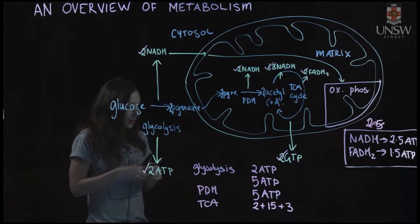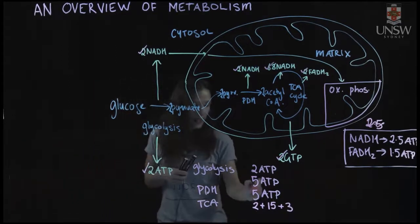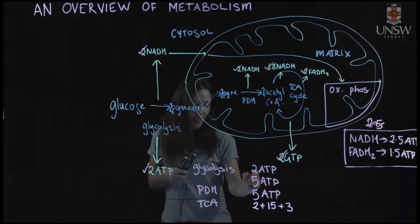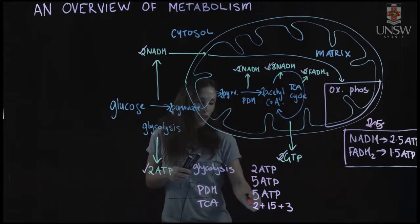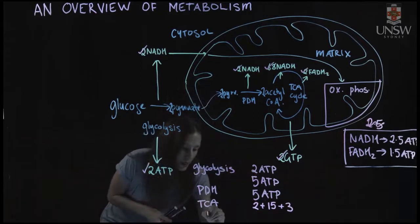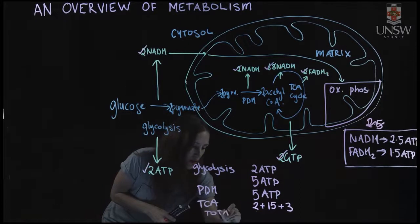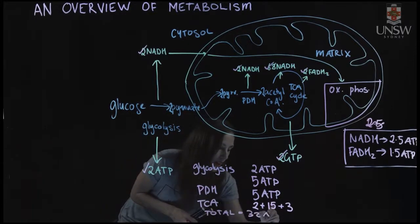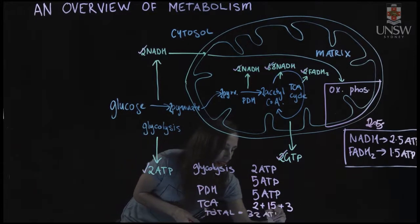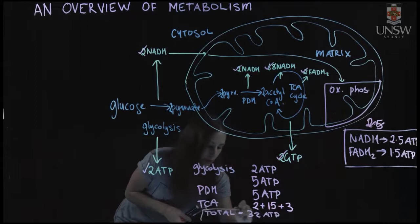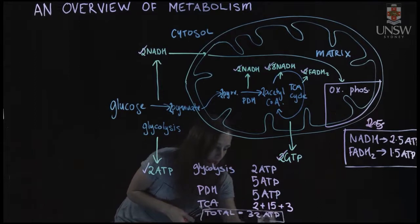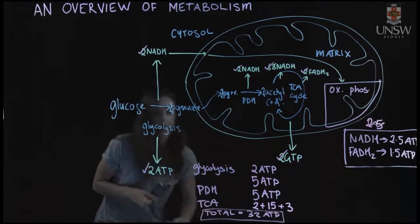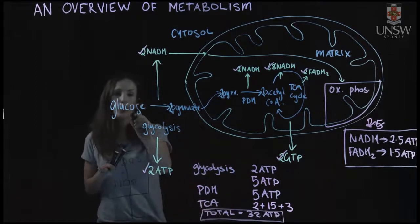Adding it all up: 15 + 5 + 5 + 5 + 2 = 32. So we come to a total of 32 ATP being produced from the oxidation of one glucose molecule.